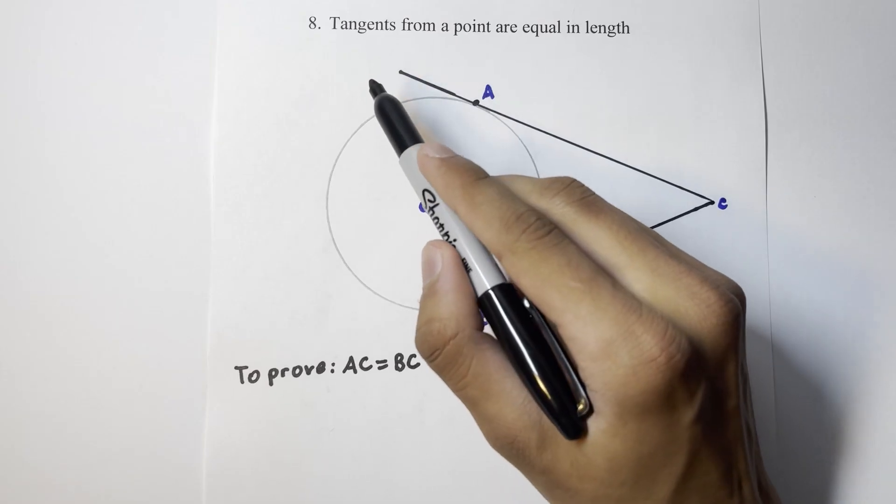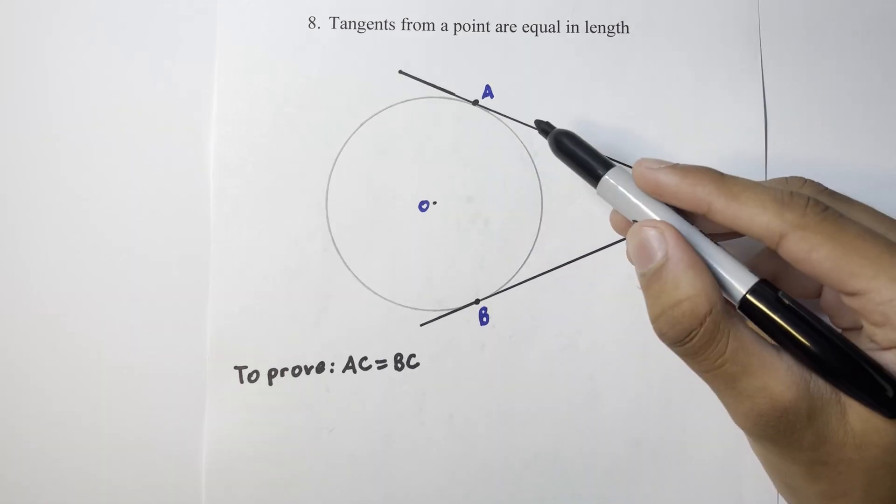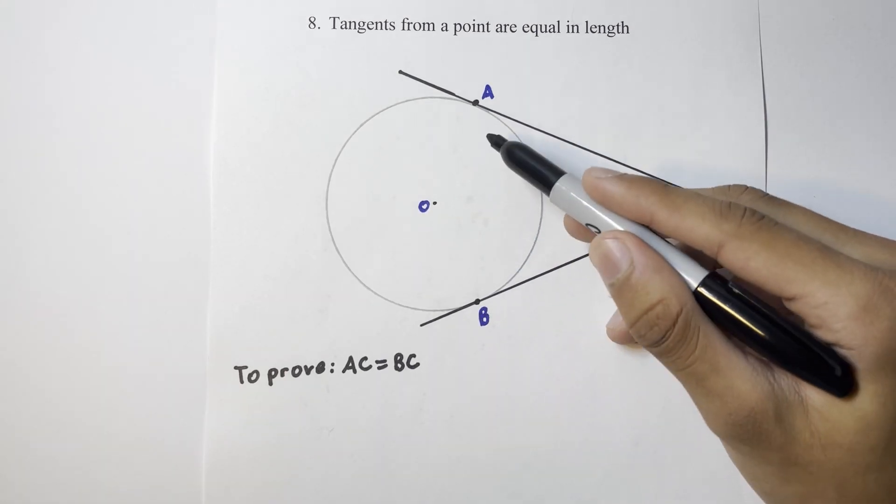The first circle theorem that we're going to discuss states that tangents from a point are equal in length. A tangent is a straight line which only just touches the circumference of a circle, only meeting it at one point.